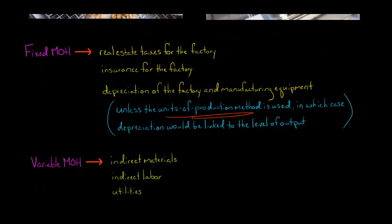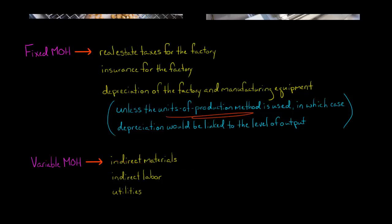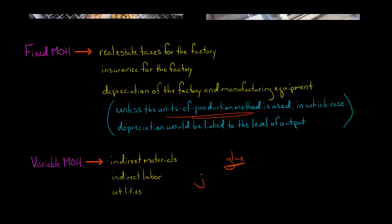In terms of variable manufacturing overhead, we have indirect materials. For example, if you were manufacturing tables made out of wood and you occasionally use a trivial amount of glue, you wouldn't consider that a direct material — that would be an indirect material. Indirect labor is another example, such as a janitor cleaning the factory floor or a production supervisor. They're not actually working on the product itself, so that's indirect labor.